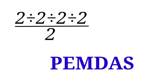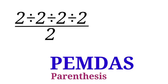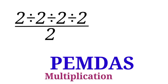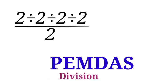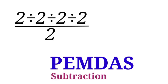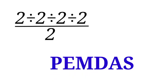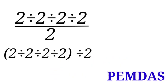Now let us follow the order of operations and solve it correctly. We will be using PEMDAS: P is for Parentheses, E is for Exponents, M is for Multiplication, D is for Division, A is for Addition, and S is for Subtraction. So let us go back to our problem.